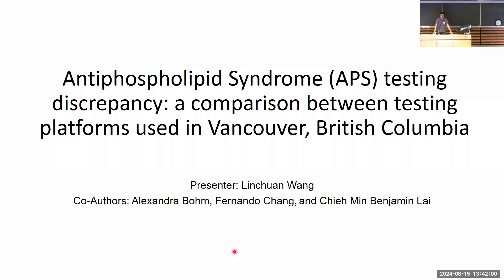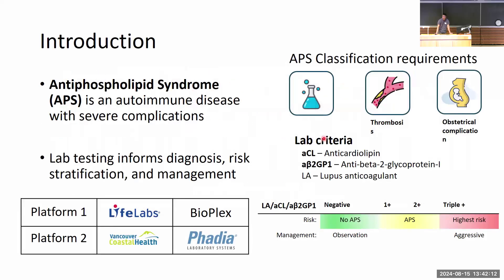My name is Lee. I am working with Dr. Benjamin Lai from VGH hematology, and today I would like to talk about antiphospholipid syndrome. APS is an autoimmune disorder that can cause very dangerous complications such as blood clots and miscarriages. To diagnose APS, we look at three laboratory results: anticardiolipin, anti-beta-2 glycoprotein 1, and lupus anticoagulant. The number and pattern of test positivity informs of the patient's risk of developing complications and is important for clinicians to choose the most appropriate treatment and management strategy.